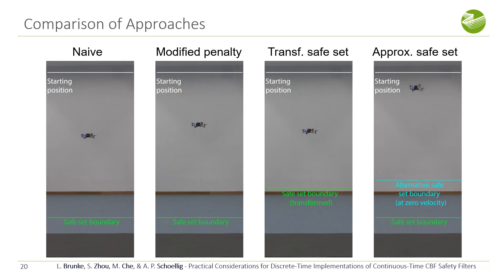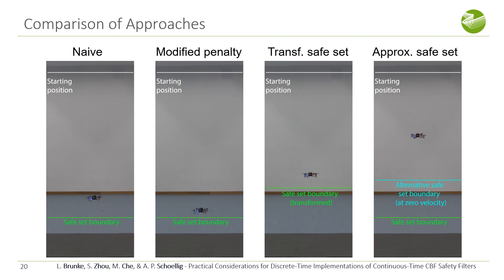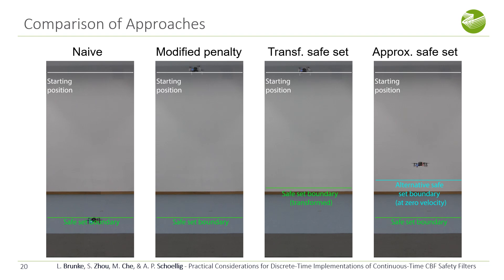We again compare all four approaches. The naive implementation leads to spikes in the control input and safe set violation. In contrast, our three proposed methods — the modified penalty, the transformed safe set, and the approximated safe set — all lead to safety filters that achieve safety with much smoother control inputs. If you're interested in more details, I encourage you to check out our paper. Thank you for your attention.